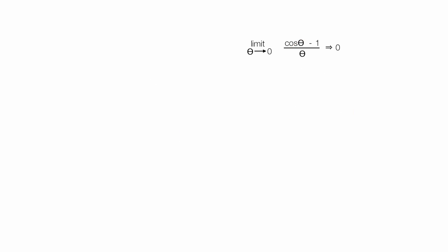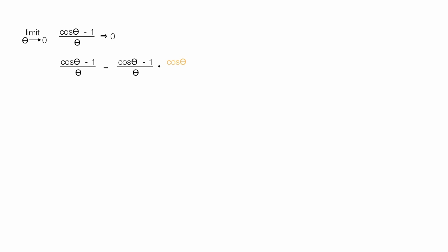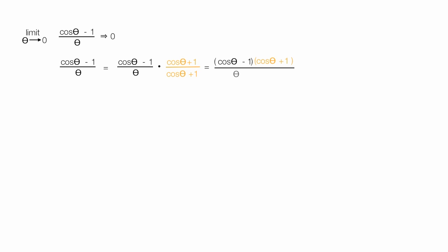Now let me show you the long proof. So cosine theta minus one divided by theta is equal to cosine theta minus one divided by theta, times cosine theta plus one divided by cosine theta plus one. This ratio I just put in is equal to one, so I'm essentially multiplying the equation by one. You're probably wondering why I do that — the answer is you won't know until you've seen the proof and worked with these proofs several times.